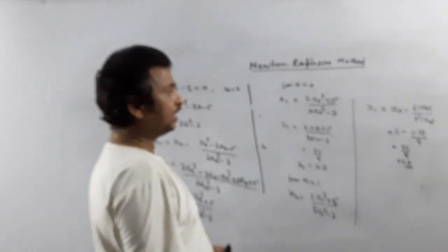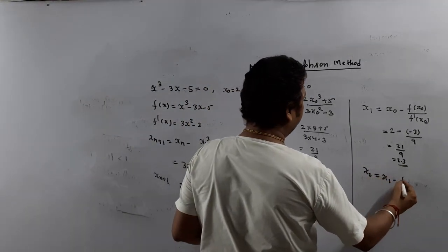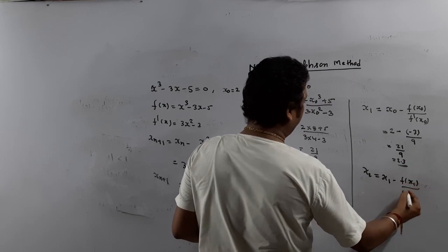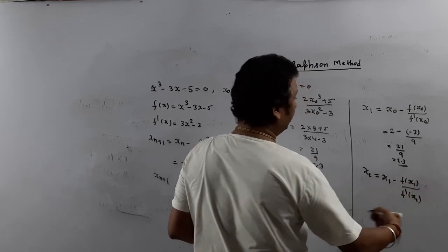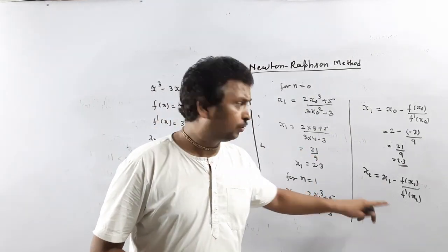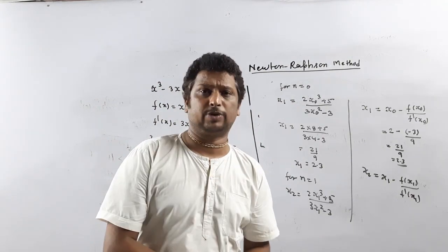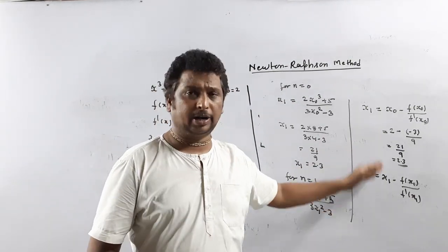Now if they ask for x_2, what is x_2? x_2 is x_1 minus f(x_1) upon f'(x_1). Just put and you will get the value. So this is the method to do directly. Don't find the relation between x_n and x_{n+1} and then substitute it.